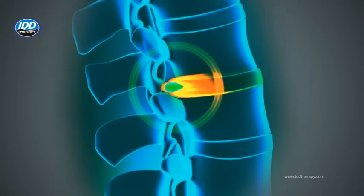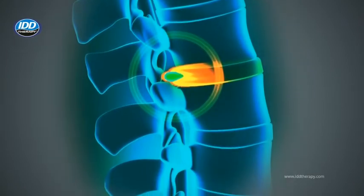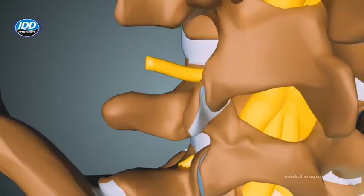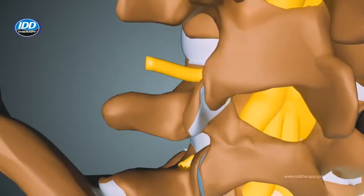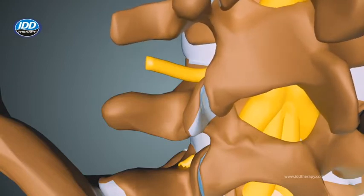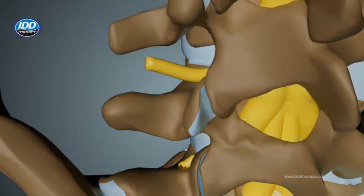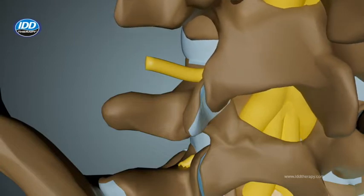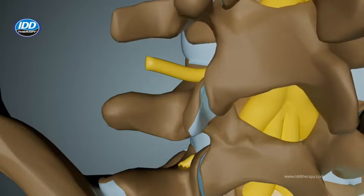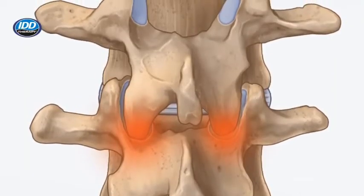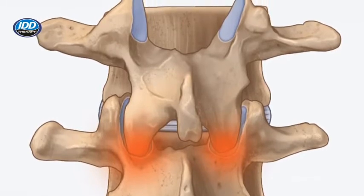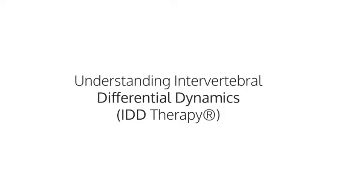As degeneration of the disc progresses, these changes can lead to arthritis, disc herniation, or spinal stenosis. The facets are small joints in the back of the spine surrounded by cartilage and synovial fluid to keep them lubricated. They provide load-bearing support and help with a wide range of movements like bending. Facet joint disorders typically occur alongside disc problems and can have overlapping symptoms.